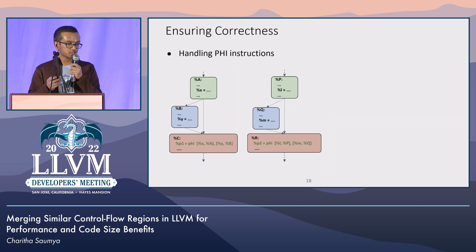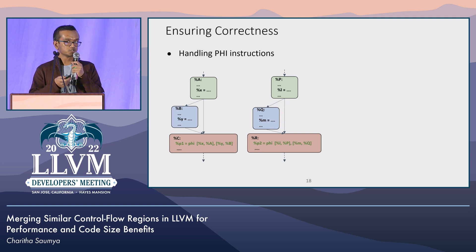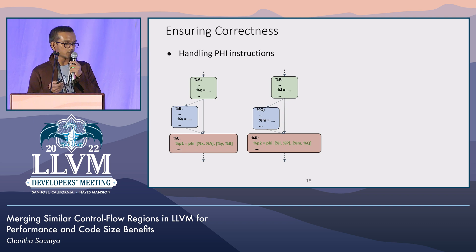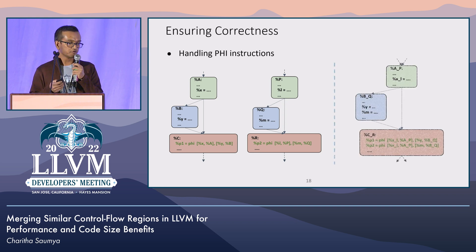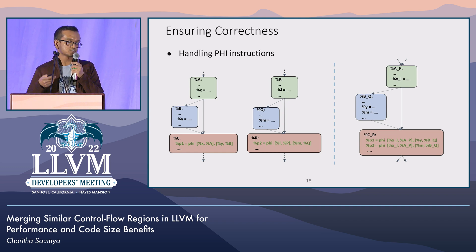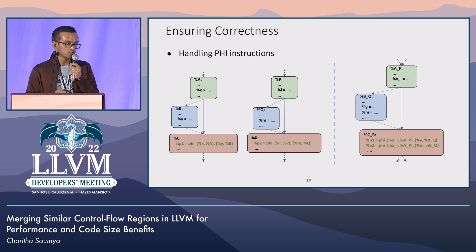Another consideration is how to handle PHI nodes during merging. We can't add select instructions before PHI instructions. Therefore, what we do is copy the two PHI instructions and then allow other passes to optimize the PHI instruction array if they can be simplified.